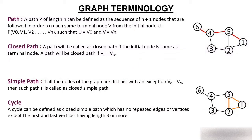Now let's look at graph terminology. A path P of length n is defined as a sequence of n+1 nodes or vertices followed in order, used to reach some terminal node V from an initial node U. For example, a path from node 6 to node 1 passing through 3 edges has length 3 and contains 4 vertices.